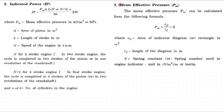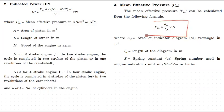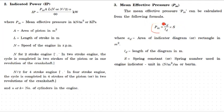Next, we look at the mean effective pressure. The mean effective pressure PM is calculated as AD divided by LD, multiplied by the spring constant. AD is the area of the indicator diagram, and LD is the length of the diagram. The spring constant gives us the units.